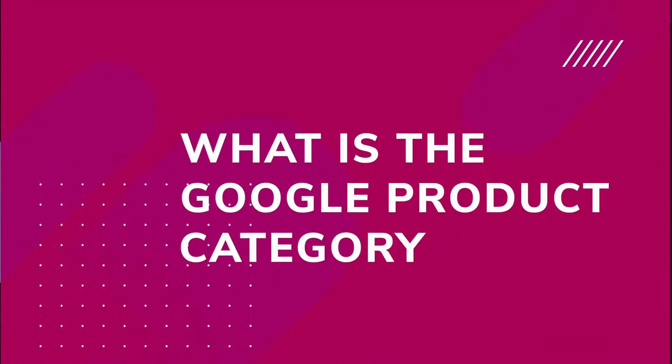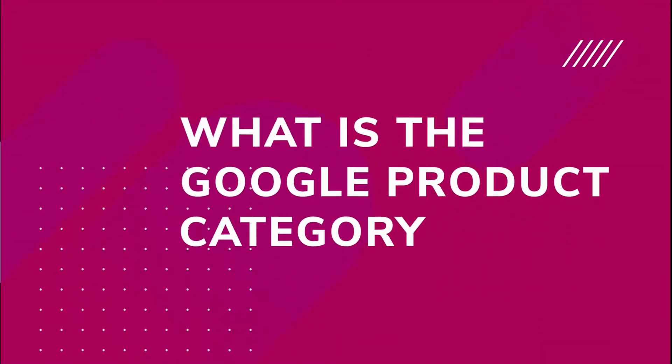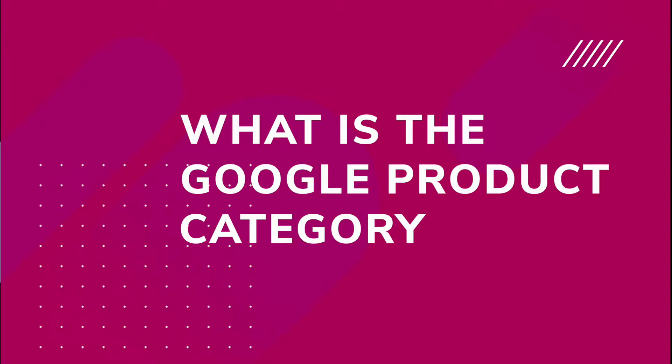What is exactly Google product category? Google product category is basically a list of terminology defined by Google of the types of products that are being sold. Let's say you could be selling apparel, you could be selling chocolates, you could be selling swimwear or skincare products.